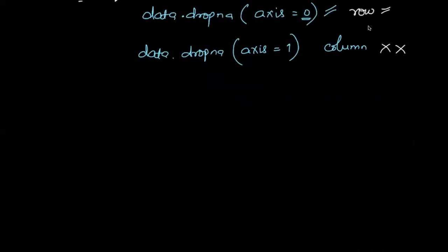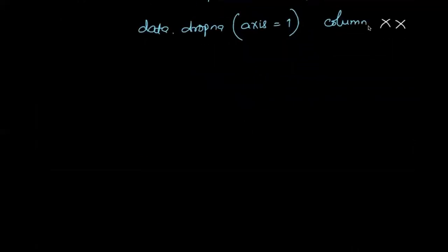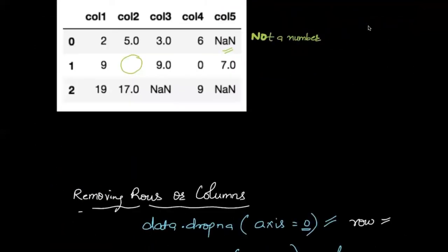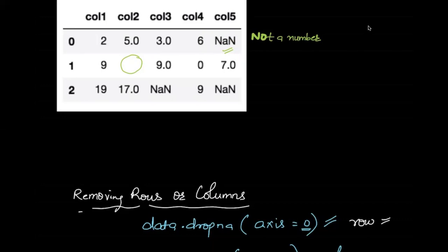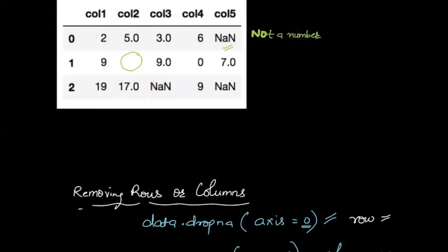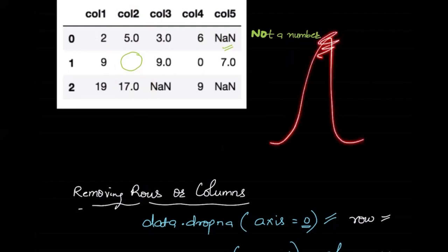The next option is imputation. Impute means putting in the value of either mean or median into your data. Sometimes students just fill missing values with zero — that's a wrong approach. Putting zeros everywhere does not maintain the data distribution. For example, if column two is following a bell-shape distribution, adding zeros wherever you have null values will change the peak and change the distribution.